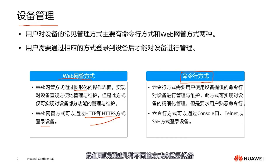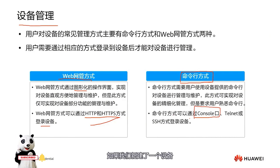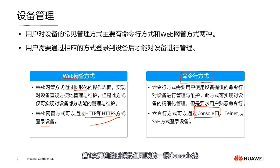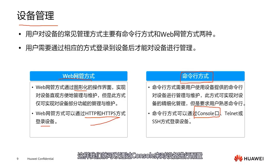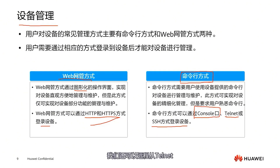If you want to use the command line method, we can log into the device in a few different ways. The first way is via the console port. If we are setting up a new device at the first power on, we can use a console cable and connect it via the console port to link with our PC. This way we can configure the device through the console for initial configurations.